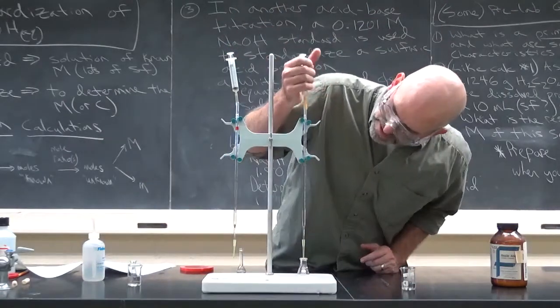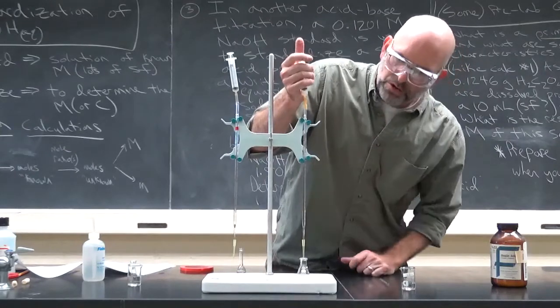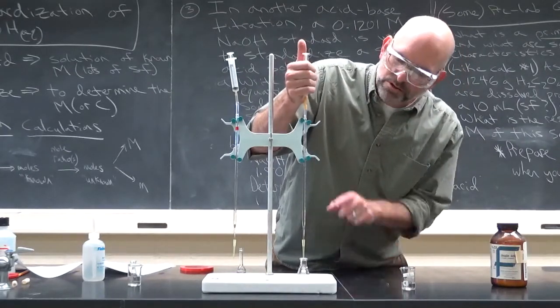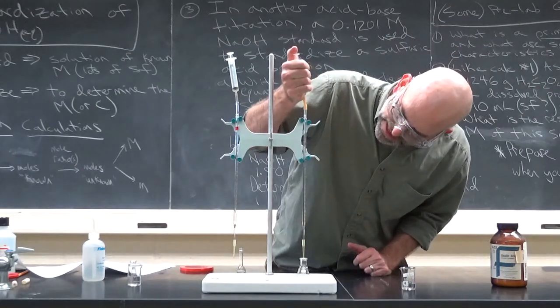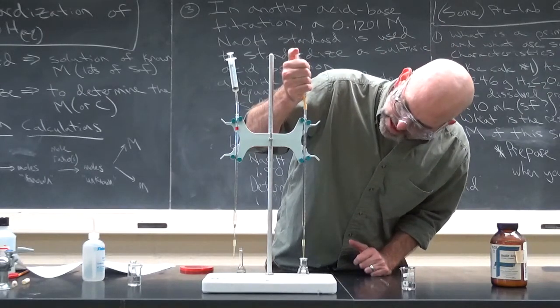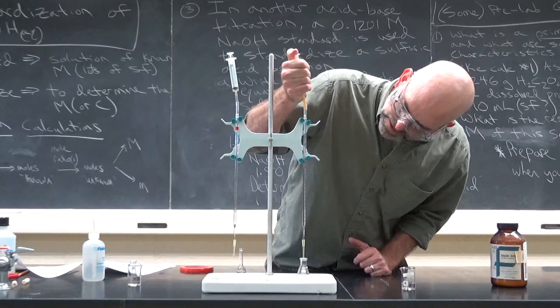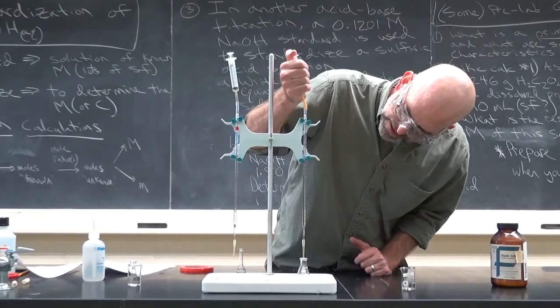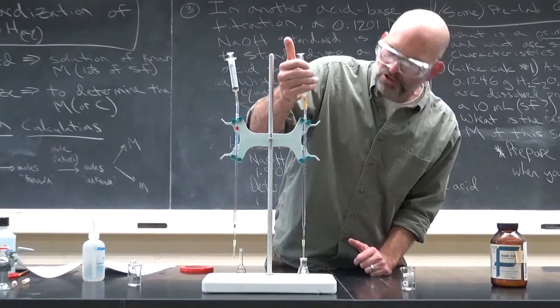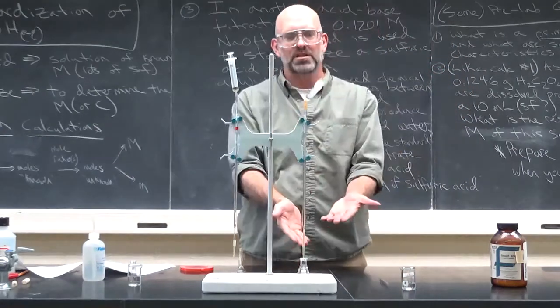You're going to write down 1.00 mills. So you look on the side, and you find your initial volume, add 1.00 to it, and push the syringe until you get that. And again, I don't need to demonstrate this, but you go carefully. One mill isn't very much.